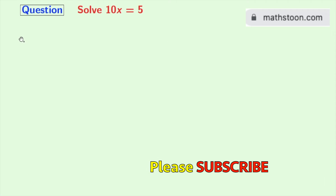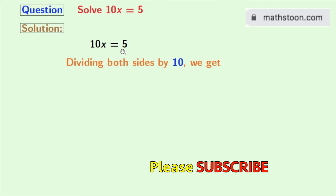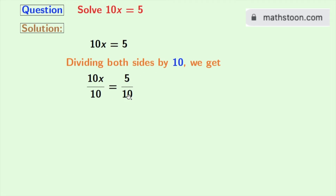Now let's start. This is our given equation. To get the value of x, we will divide both sides by 10. Doing so, we get 10x divided by 10 is equal to 5 divided by 10.